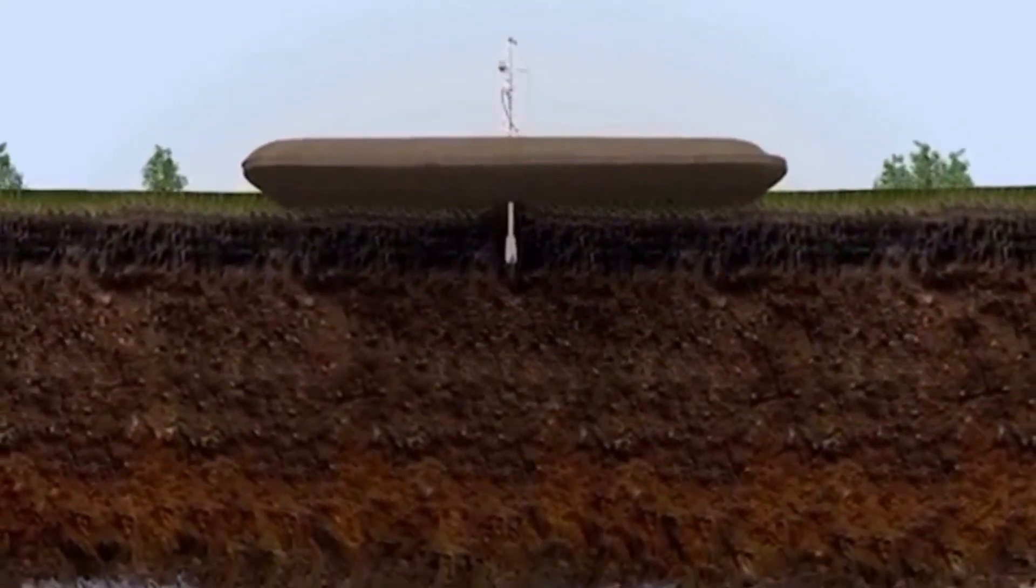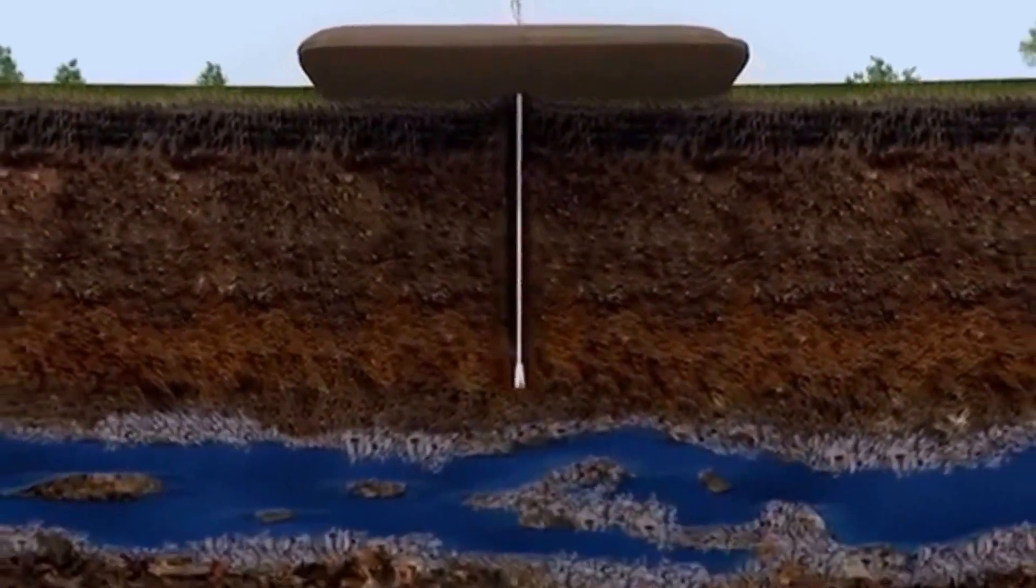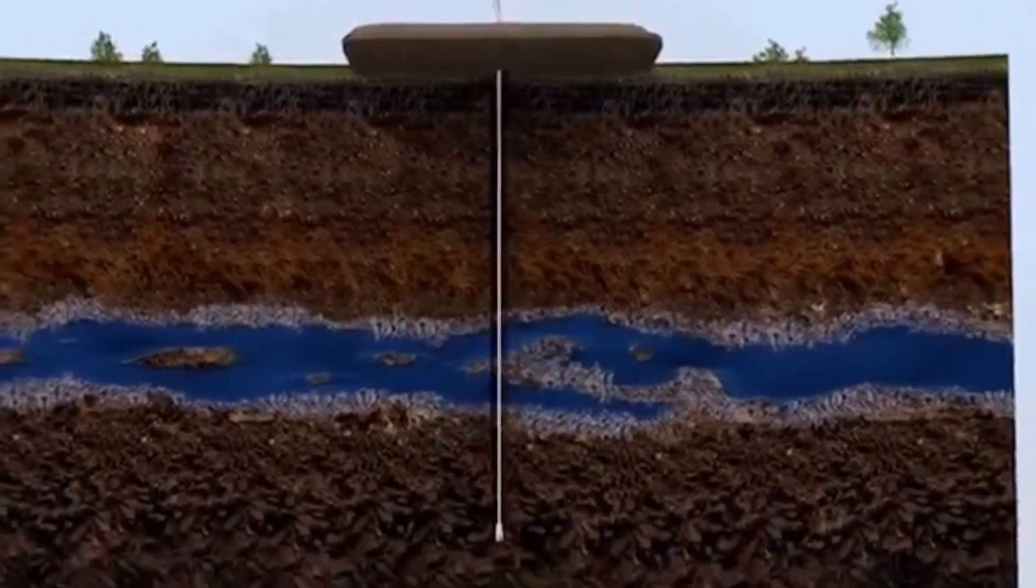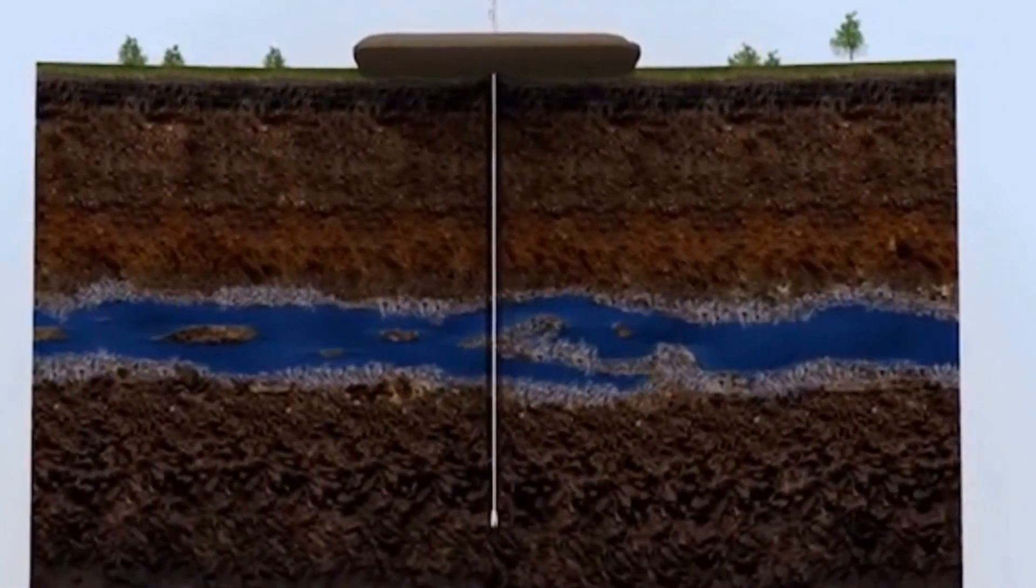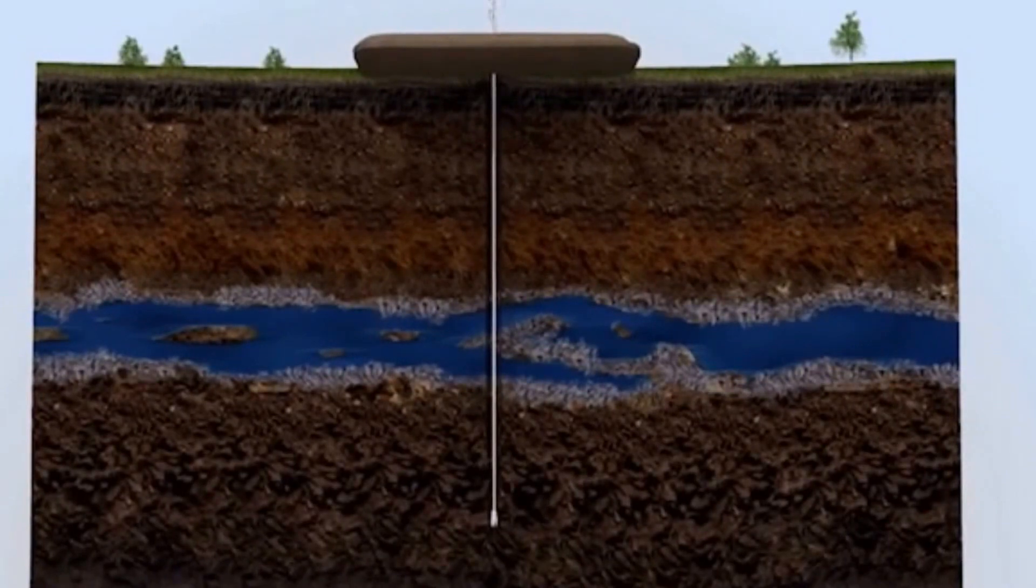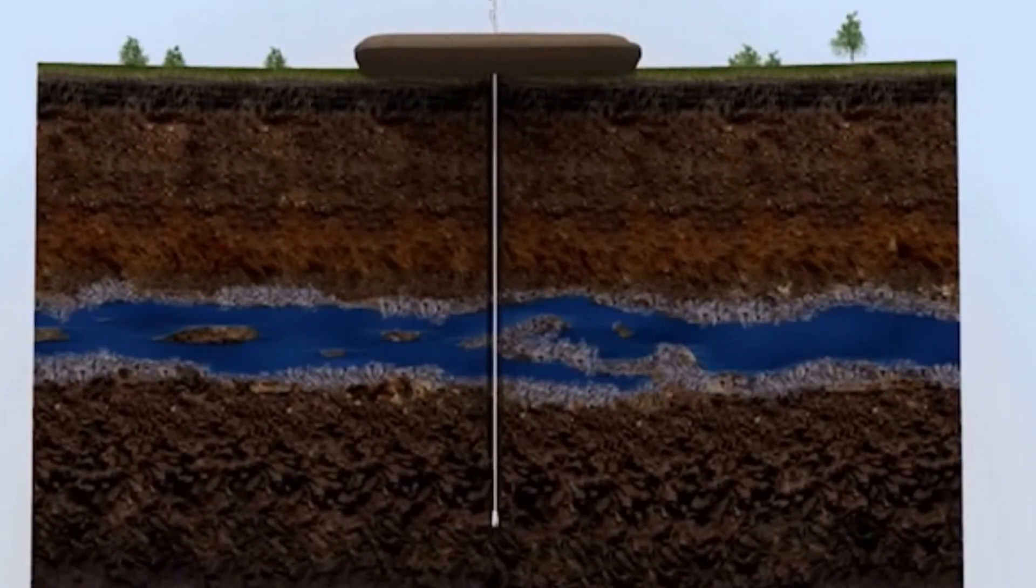The initial steps are the same as for any conventional well. A hole is drilled straight down using freshwater-based fluids, which cools the drill bit, carries the rock cuttings back to the surface, and stabilizes the wall of the wellbore.